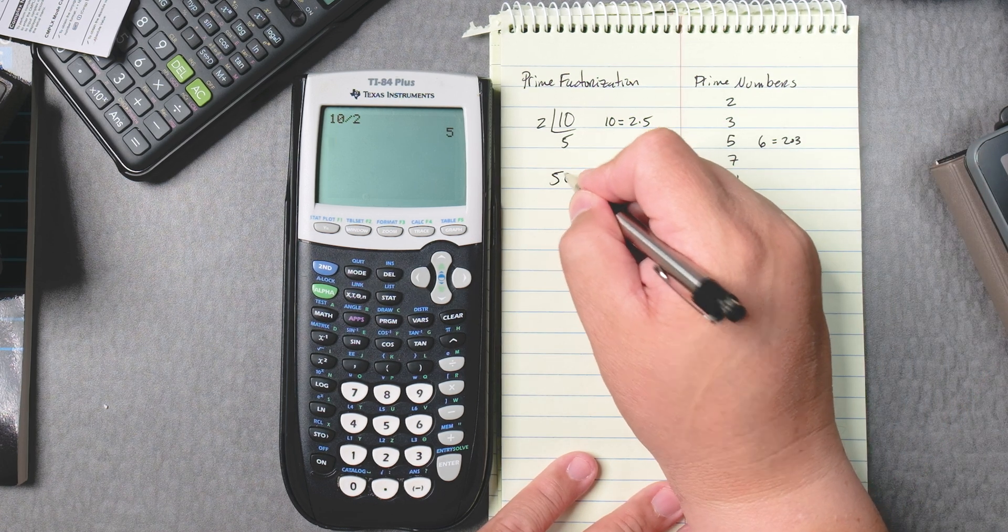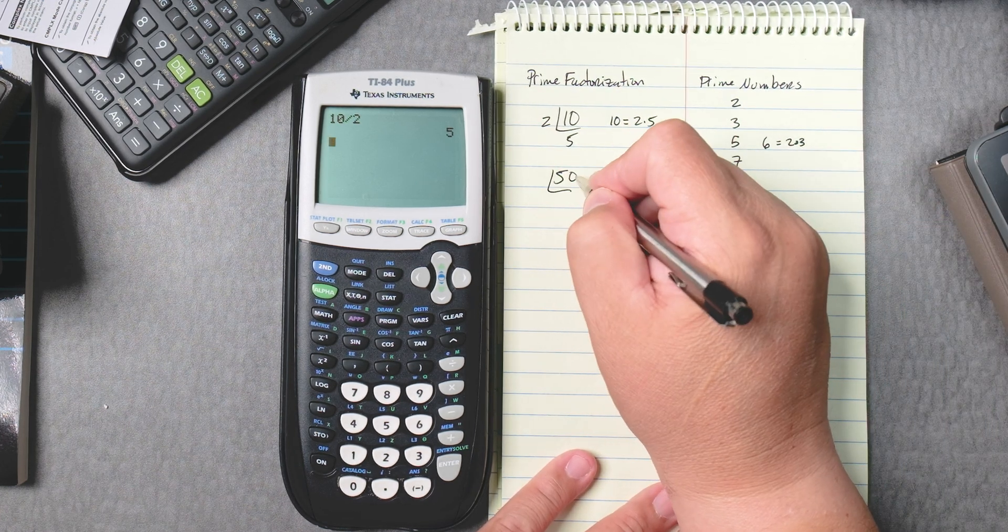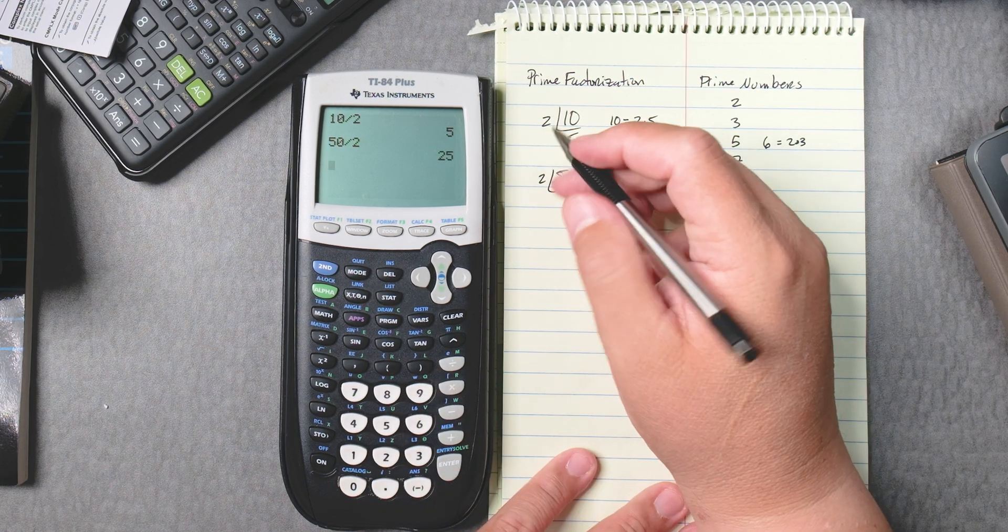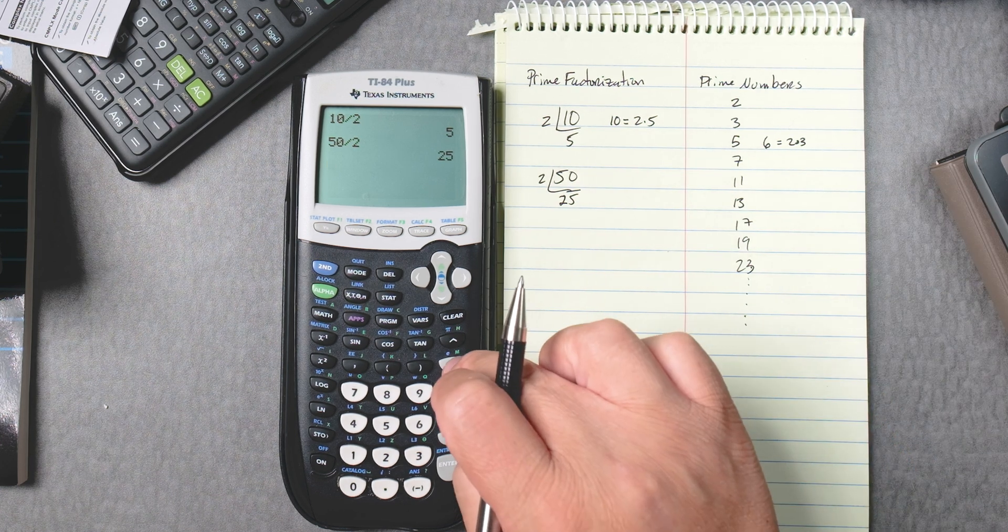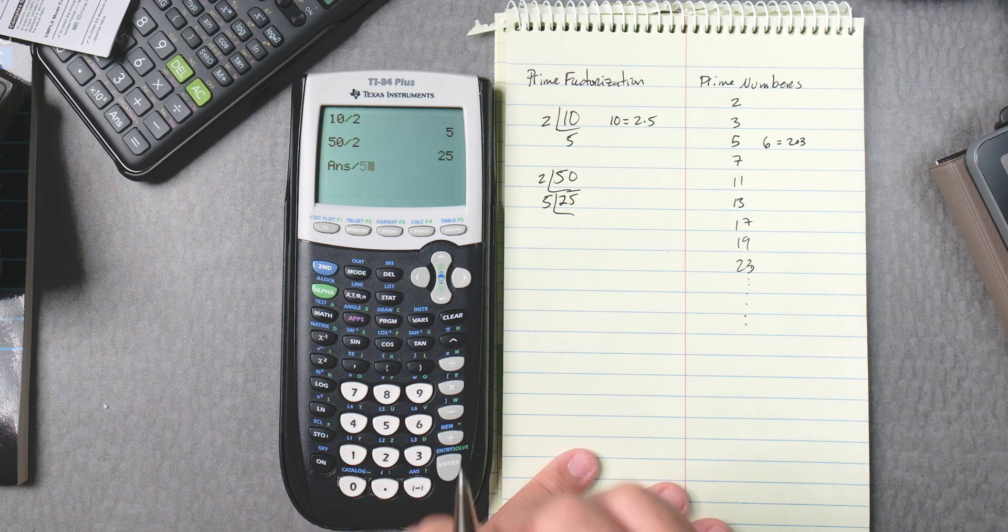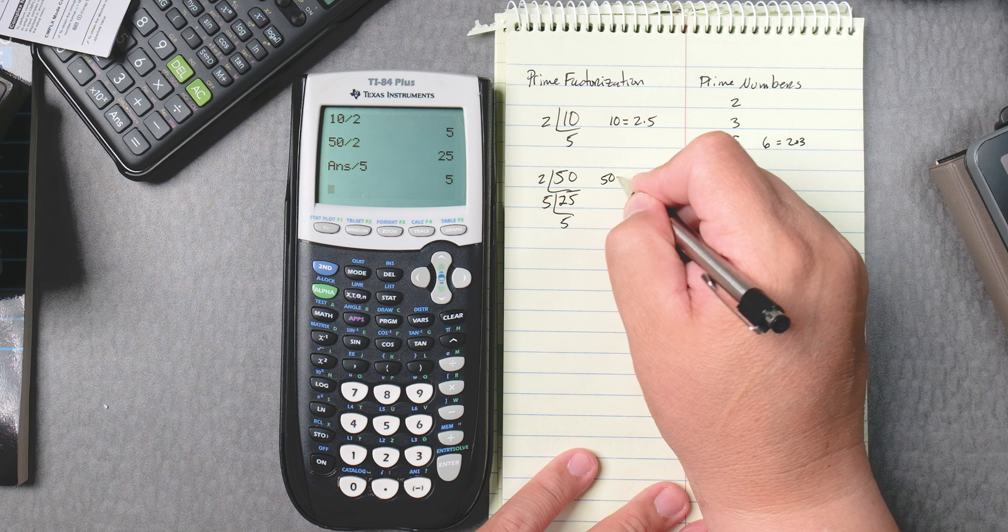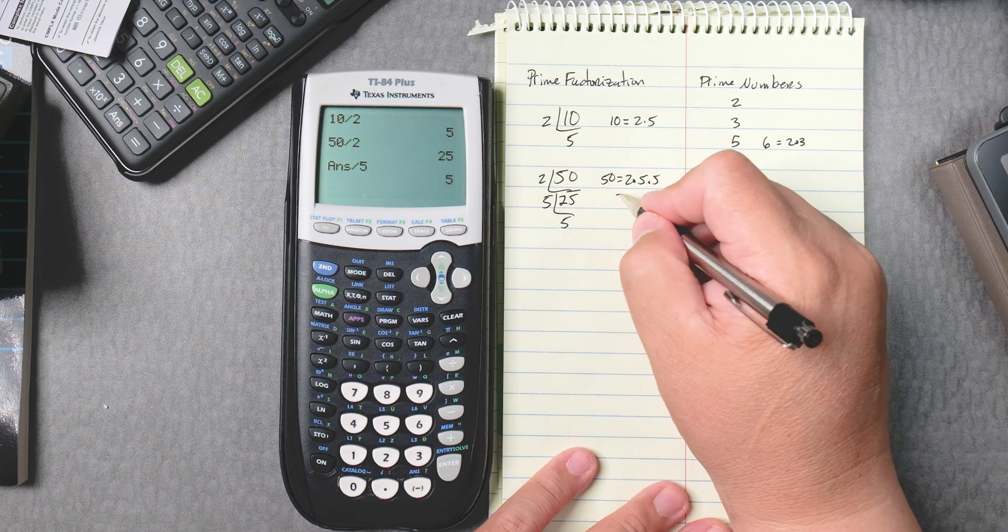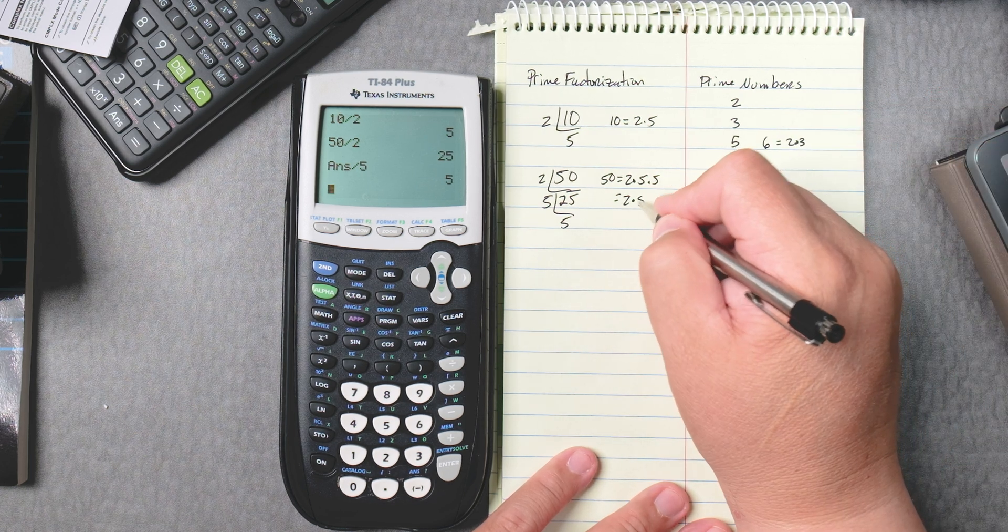Let's do 50. Can it be broken down into primes? Of course it can. It ends in 0, so we know that 2 goes into 50, 25 times. If we press divide here, because I know 5 will go into 25, it would be 5. So 50 is broken down into 2 times 5 times 5, but there's also a shortcut notation: 2 times 5 squared.